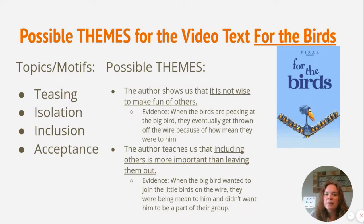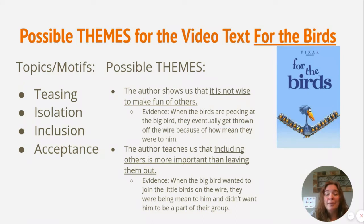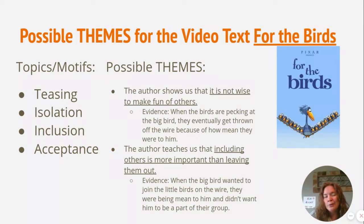So those things kept popping up throughout. Taking those, you can create some possible themes — and again, yours can be different as long as you have evidence to prove it. One possible theme: 'The author shows us that it is not wise to make fun of others.' My evidence is when the birds are pecking at the big bird, they eventually get thrown off the wire because of how mean they were to him. The next one: 'The author teaches us that including others is more important than leaving them out.' The evidence is when the big bird wanted to join the little birds on the wire, they were being mean and didn't want him to be part of the group — and we know how that ended for the little birds.